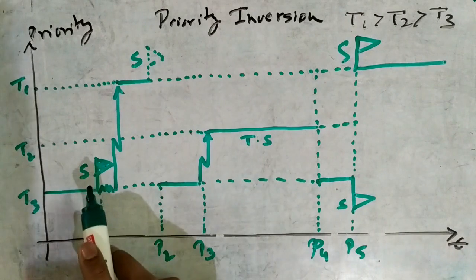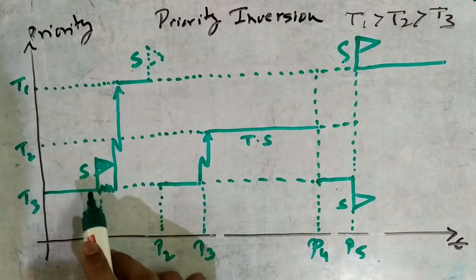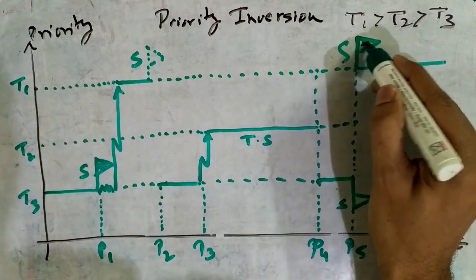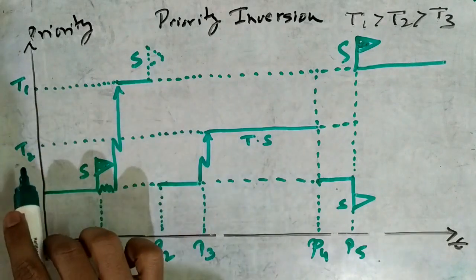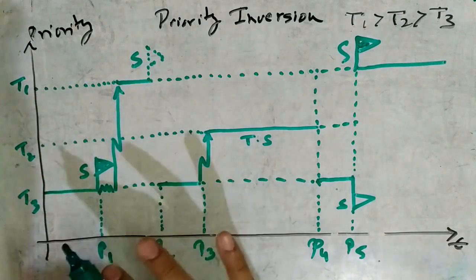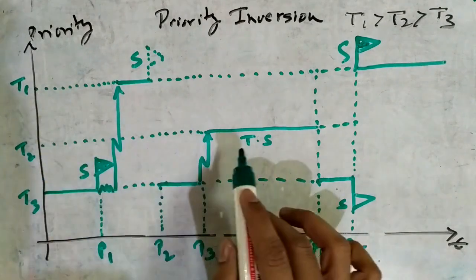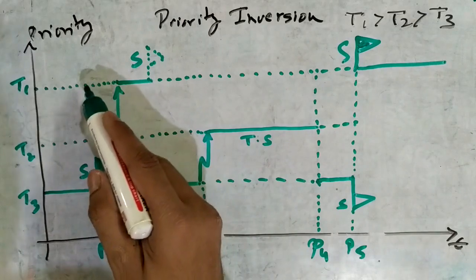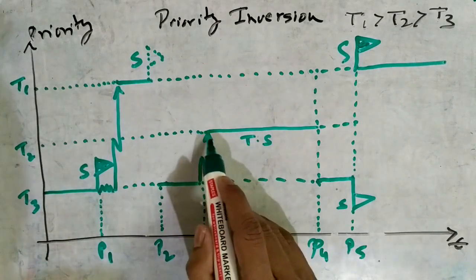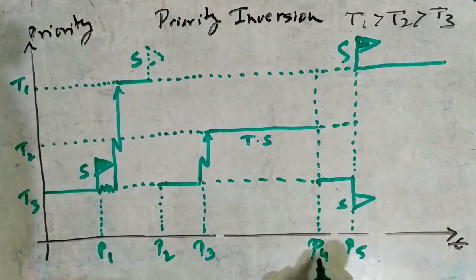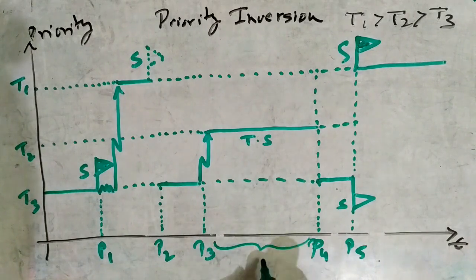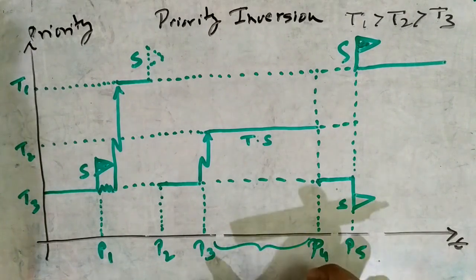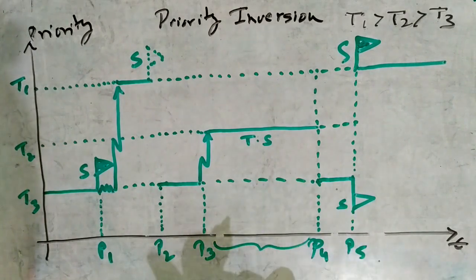Task T1 waiting for T3 is acceptable because T3 is holding a resource required by T1. However, T1 waiting for T2 is not acceptable because T2 is not holding any resource required by T1. The time between p3 and p4 is the time of priority inversion, which has to be avoided.